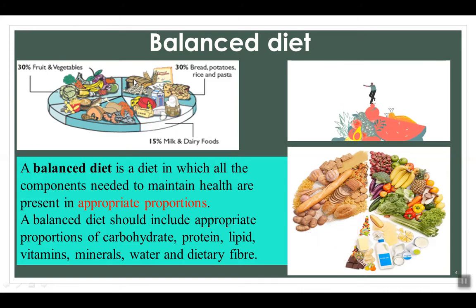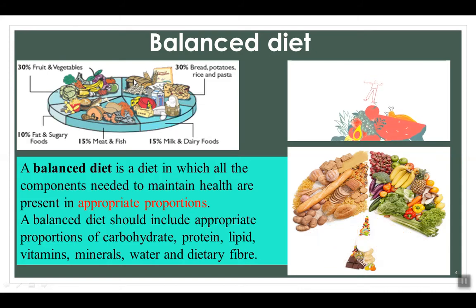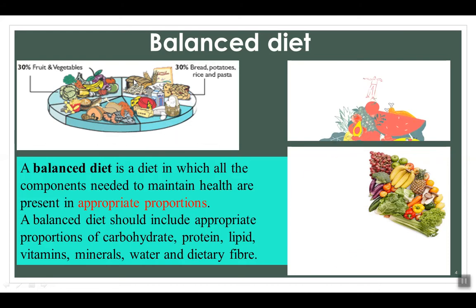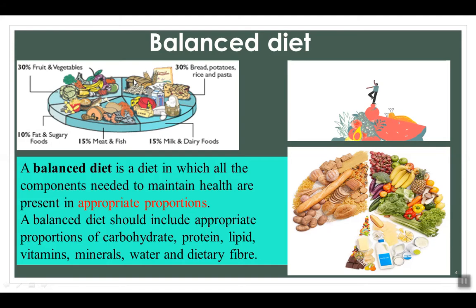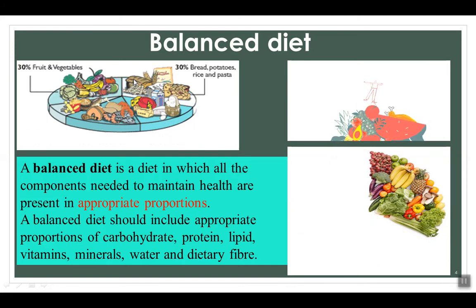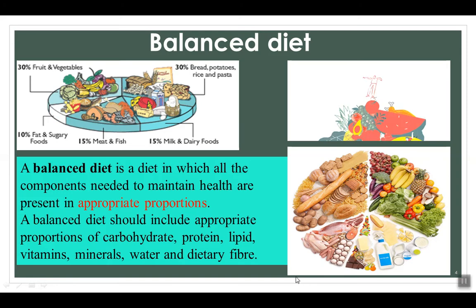Nowadays, a lot of people end up having too much dairy food or fats and proteins, and they don't get enough fresh fruits and vegetables. This can lead them to suffer from severe health consequences eventually. Different people have different energy requirements according to their gender, job, age, and the amount of physical activity they involve in. A two-year-old needs about 5,000 kJ of energy per day, whereas a 15-year-old boy needs about 12,000 kJ per day.